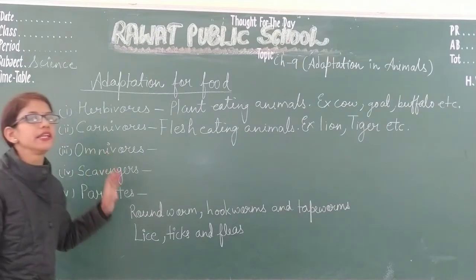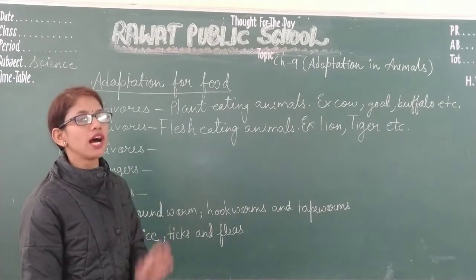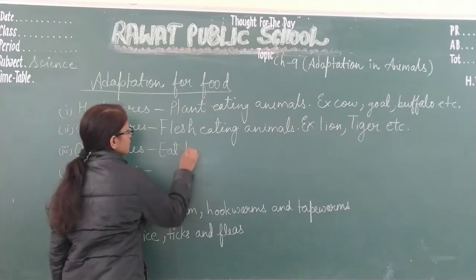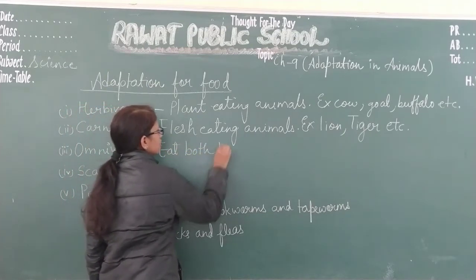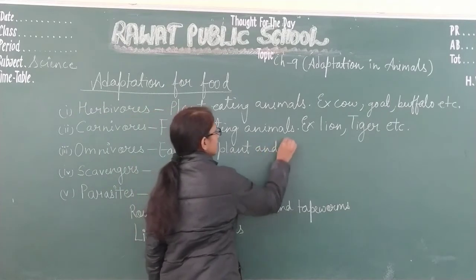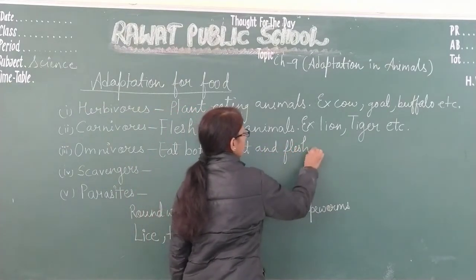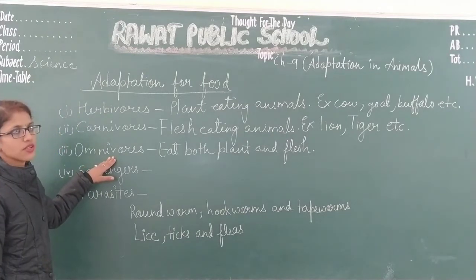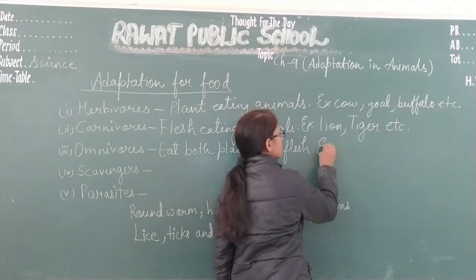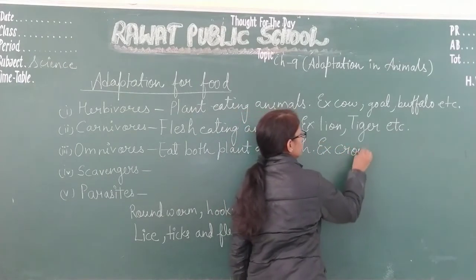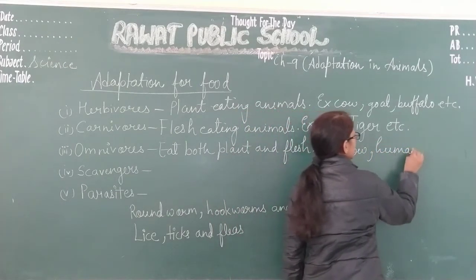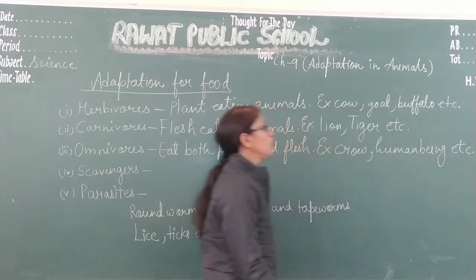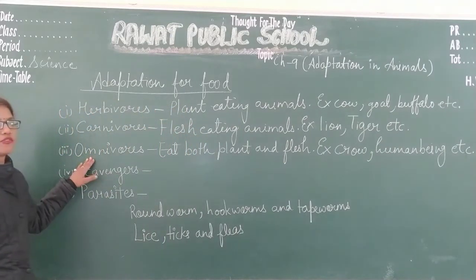Omnivores are animals that eat both plants and the flesh of other animals. Examples of omnivores are crow, human beings, etc.